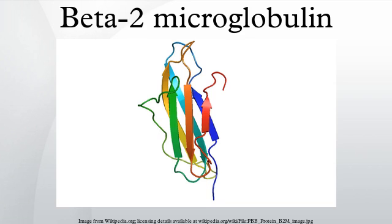Beta-2-microglobulin, also known as B2M, is a component of MHC class I molecules, which are present on all nucleated cells. In humans, the beta-2-microglobulin protein is encoded by the B2M gene.